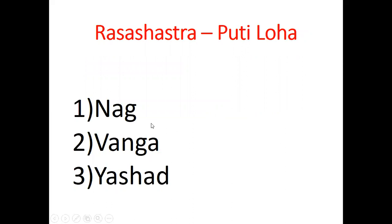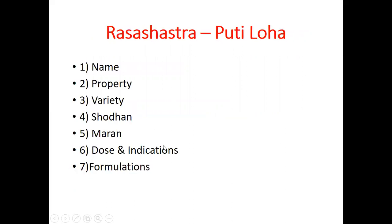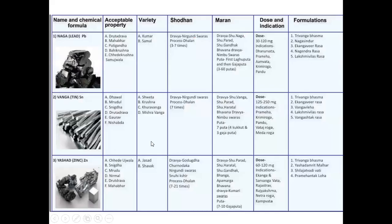We will discuss about Naga, Vanga, and Yashada. We will try to understand the name, properties, variety, Shodhana, Marana, indications, and formulations. So let us start with Naga — that is Lead, PB.